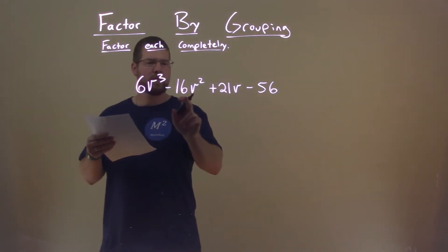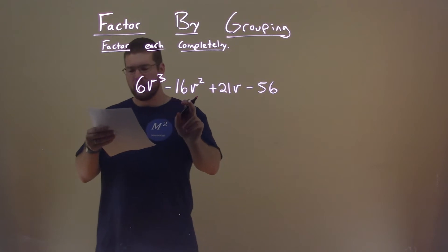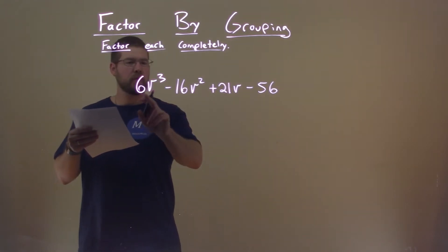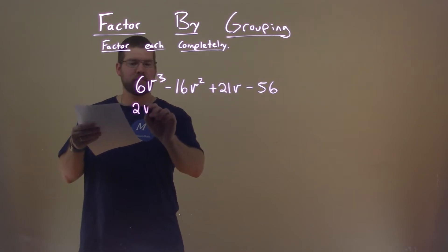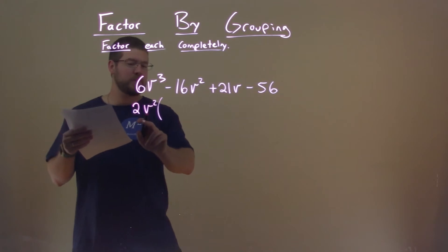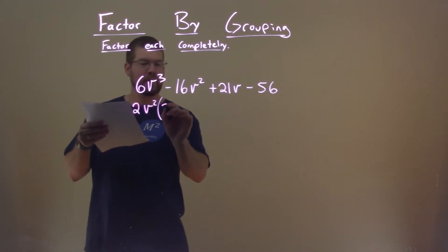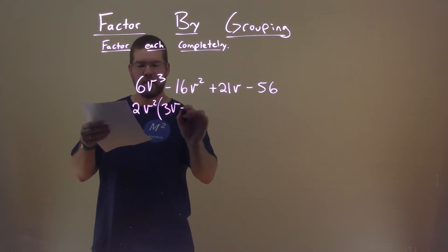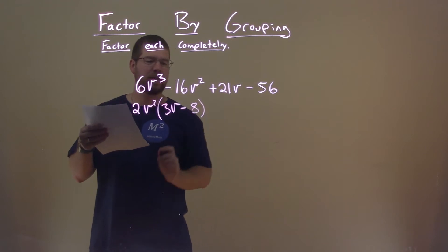First thing I look at is my first two parts right here. What is common in both of them? 2 can go into 6 and 16, and so can v². V² goes into v³ as well as v². So if we pull out a 2v², what are we left with? A 3v in the first part and just a -8 in the second.